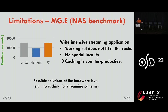Before finishing, I want to briefly mention limitations, because I don't want to give the impression that caches are a silver bullet. There are situations where caches don't perform well — most notably streaming workloads. If an application just streams data without reusing it, the cache is useless and only adds latency. There are possible hardware-level solutions, but they have not been implemented in existing hardware.